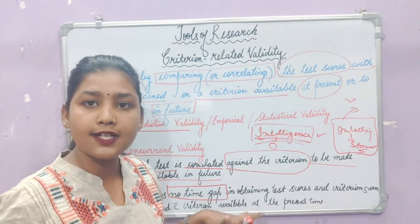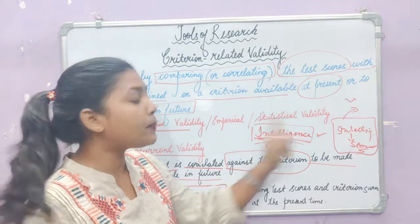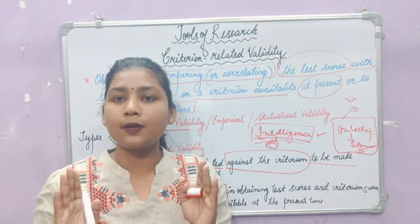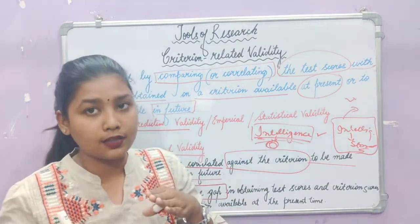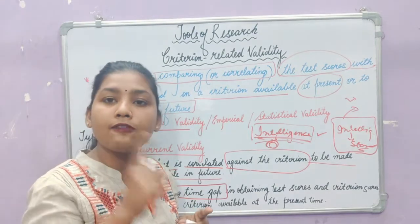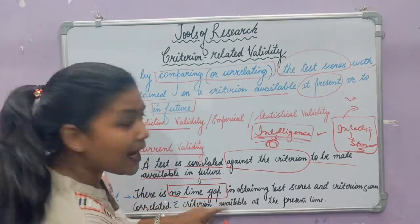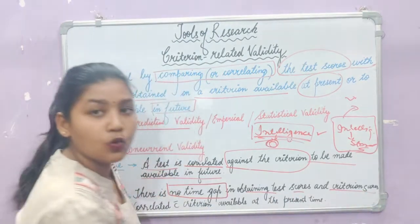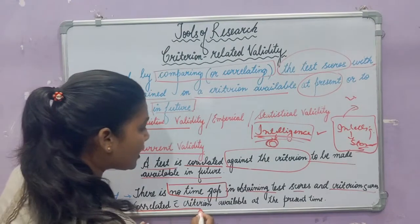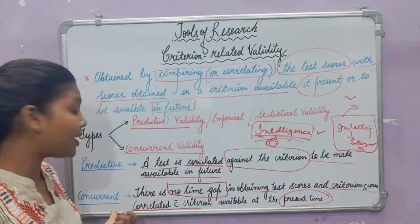When we talk about concurrent validity, there is no time gap. Suppose you have made an intelligence test and you have a score, and in the present there is already a standardised intelligence test available. You can compare those scores in the present. There is no time gap between obtaining test scores and criterion scores. The test is correlated with criteria available at the present time.